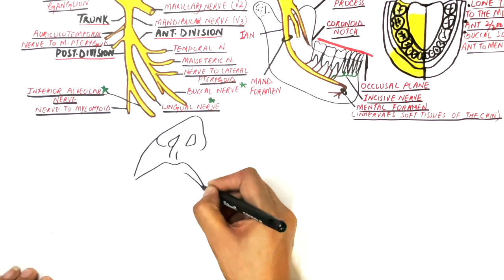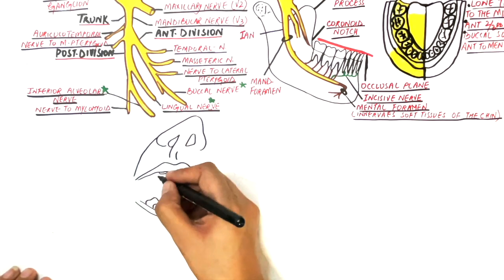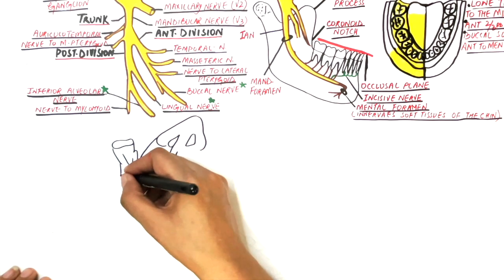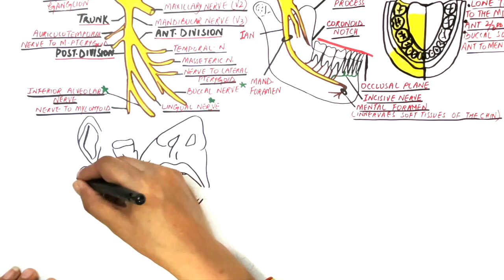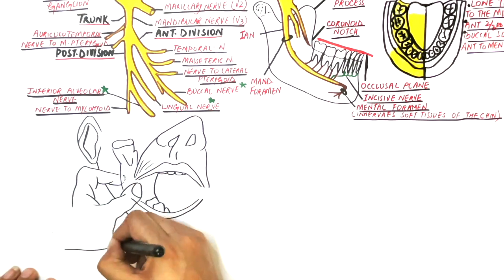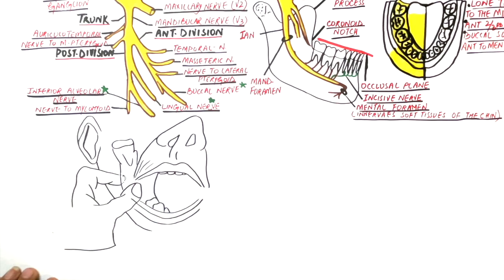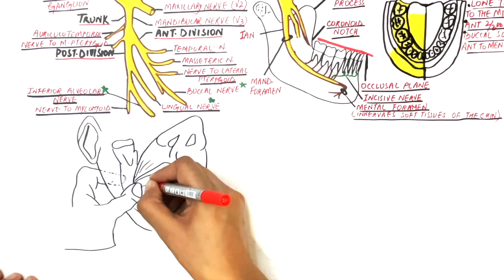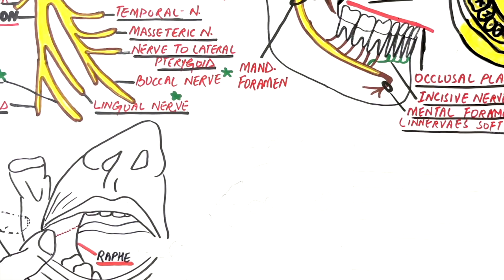To start giving an inferior alveolar nerve block, ask the patient to open wide and position all three landmarks in the oral cavity. Pull the tissues taut, palpate the deepest point of the coronoid notch with your thumb, and look for the raphe. Now draw an imaginary line from the mid portion of your thumb up to the raphe and divide this line into four parts. The needle is injected at a three-quarter distance away from your thumb toward the most posterior part of the pterygomandibular raphe. Usually a small triangular depression can be seen at this injection site.